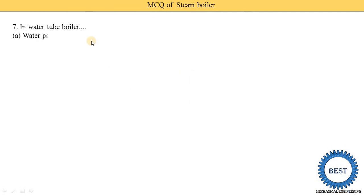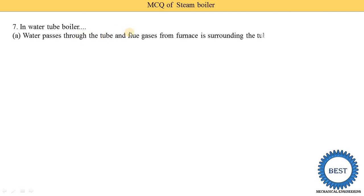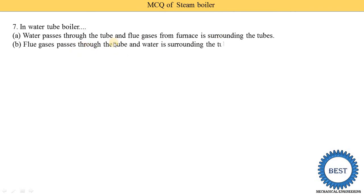In a water tube boiler, water passes through the tube and flue gases from the furnace surround the tubes. Option A is the correct answer. Water tube boiler means water passes through the tubes and flue gases pass through the surroundings of the tube.